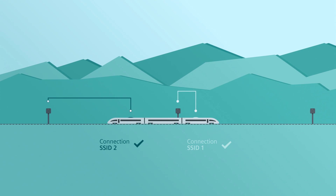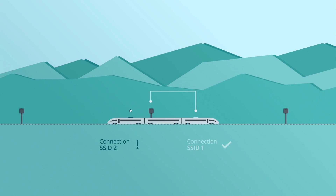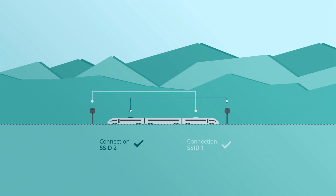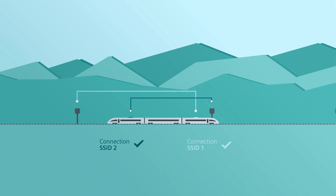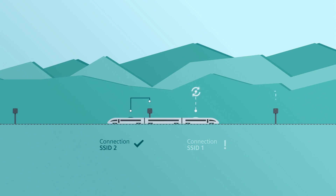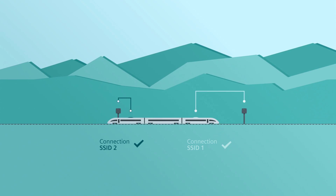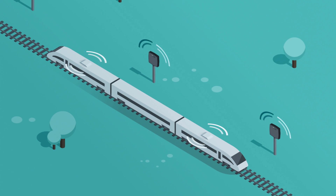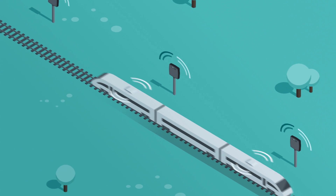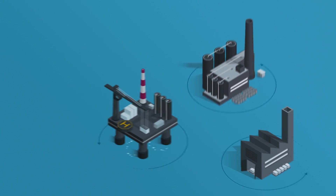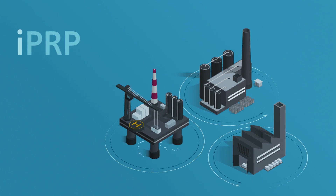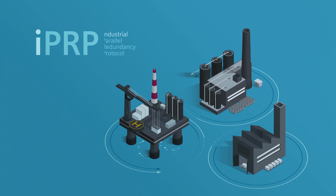Once this process is completed, the search and roaming process for Client 2 will start, if required. This ensures that at least one client always has an active connection, and redundancy is ensured at any time. Safe and reliable communication without interruptions for highest availability — with the industrial wireless LAN feature, IPRP.